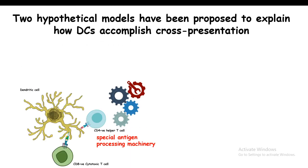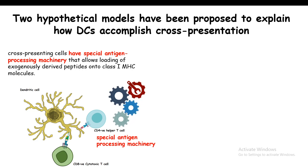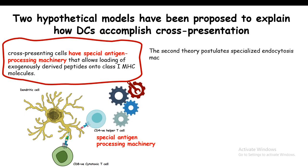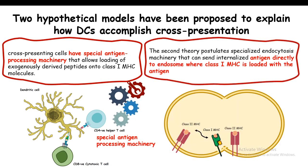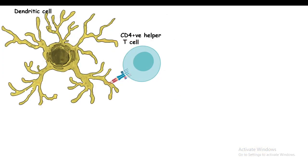There are two hypotheses which tell us why this kind of cross presentation is important and how it can be done. One hypothesis states that there is totally dedicated machinery in some dendritic cells that allows cross presentation. The other hypothesis states that the antigens to be cross presented are loaded in phagosome-like vesicles inside the cell. Both models have experimental support but are only partially correct, and the exact mechanism remains unknown.